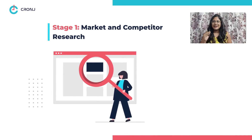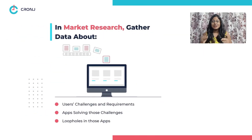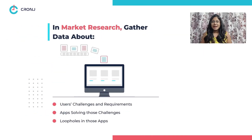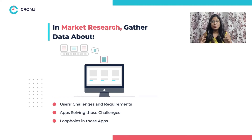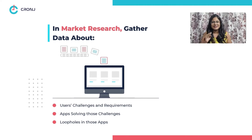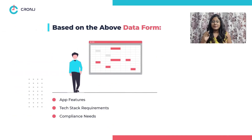Stage one: market and competitor research. As part of the market and competitor research, you must gather information about the users' challenges and requirements, how your competitors' solutions are solving these challenges, and the loopholes in those solutions. Based on the above answers, form the app's features, tech stack requirements, compliance, and other requirements.